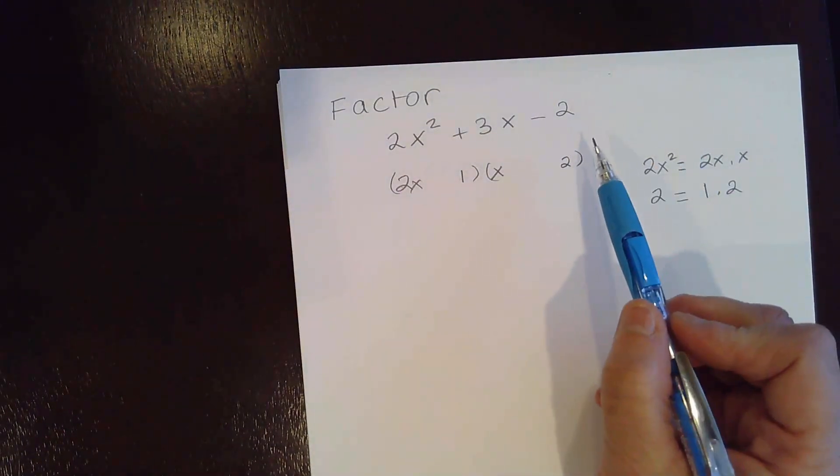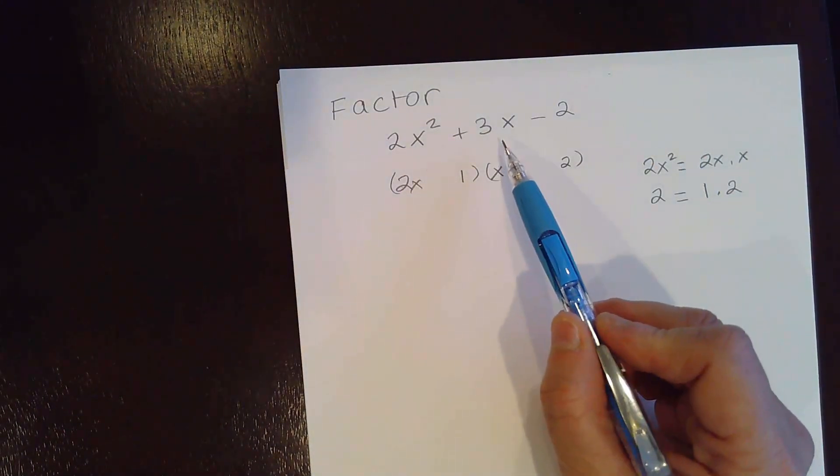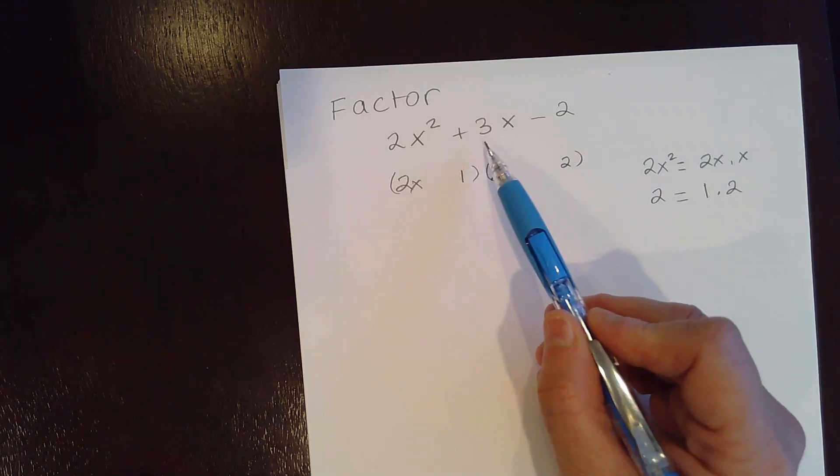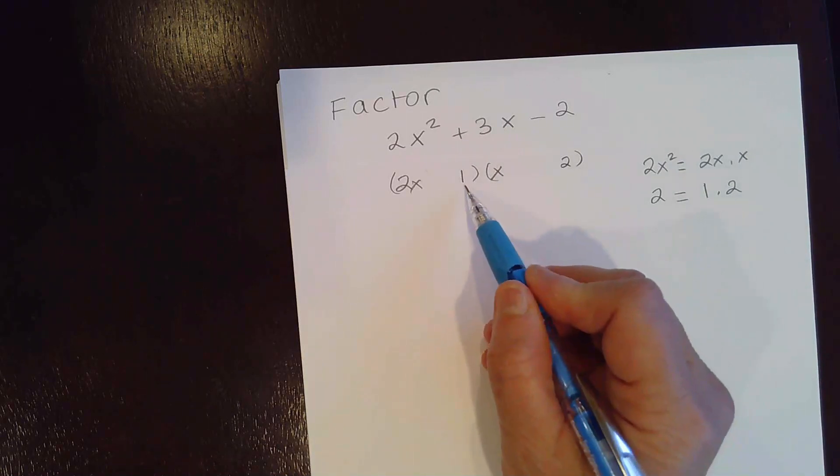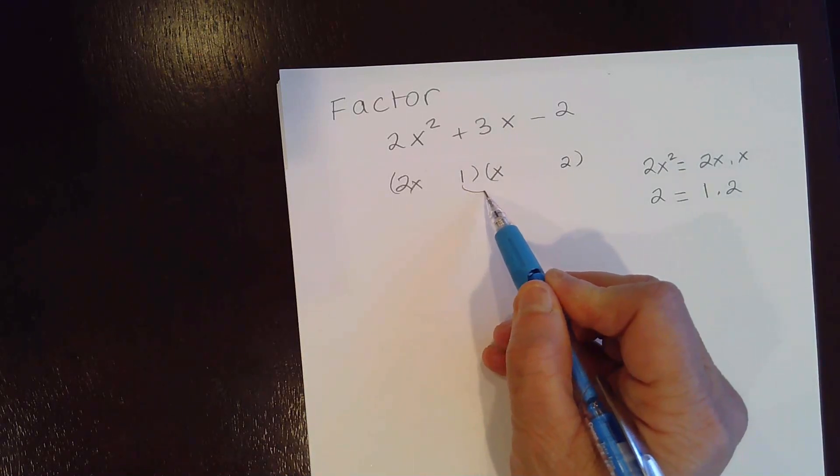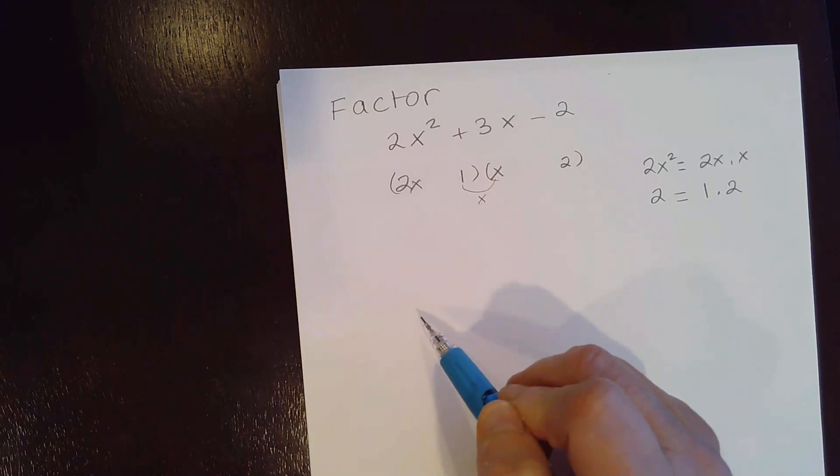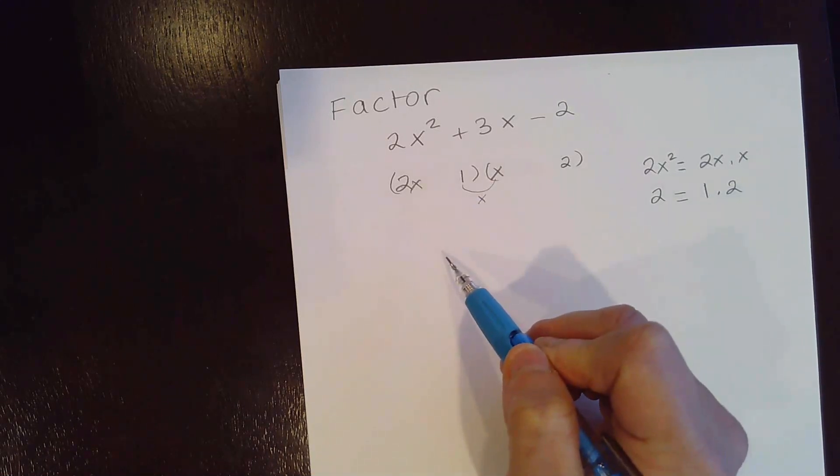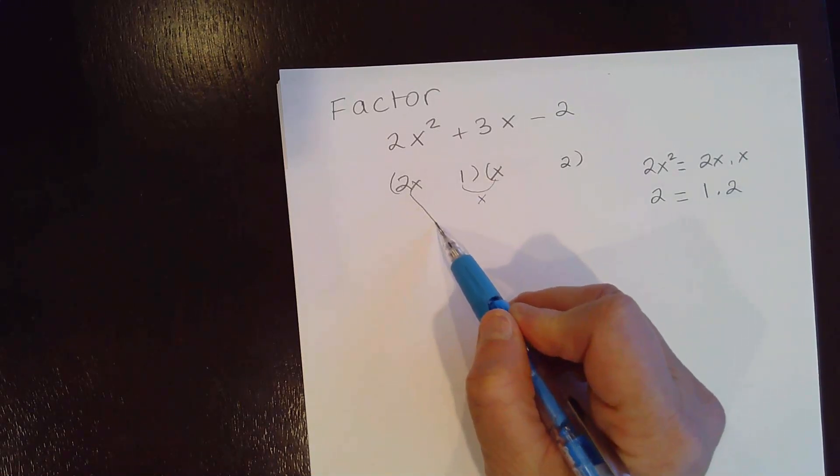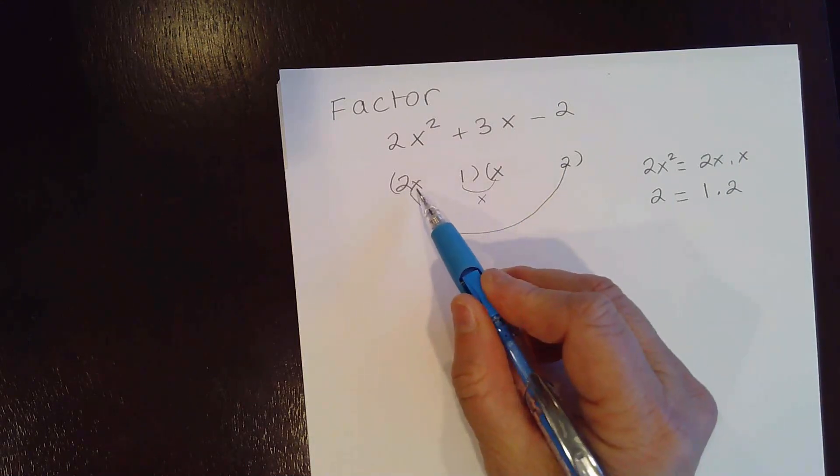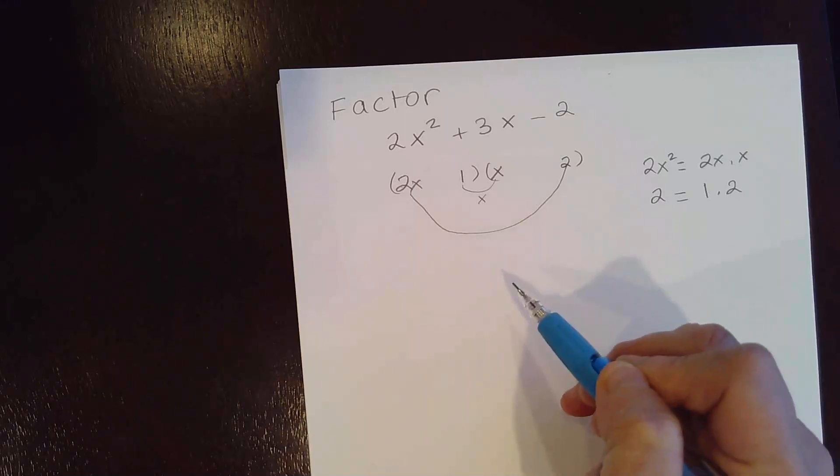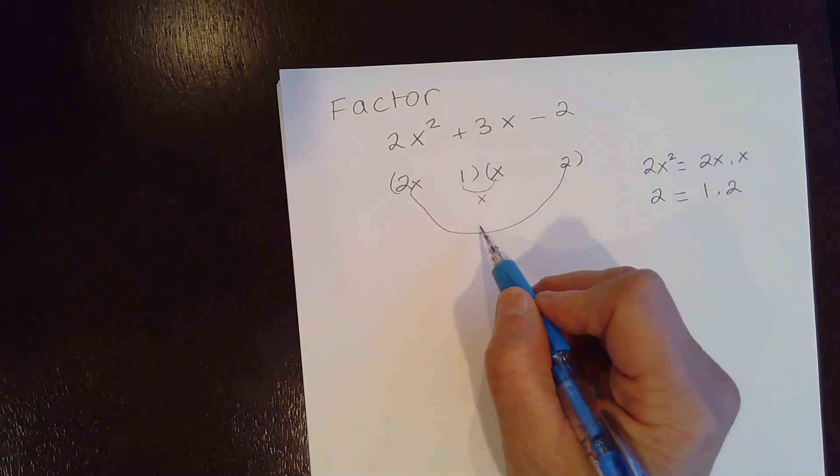Now take a look. You need to have the middle term to be positive. So you need the larger product to be positive. Take a look. This is the inside, the innermost. You have a product of 1x or x. This is a way you can check the middle term. And you take the last two terms here, the outer terms 2x and 2. You get a product of 2x times 2 is 4x.